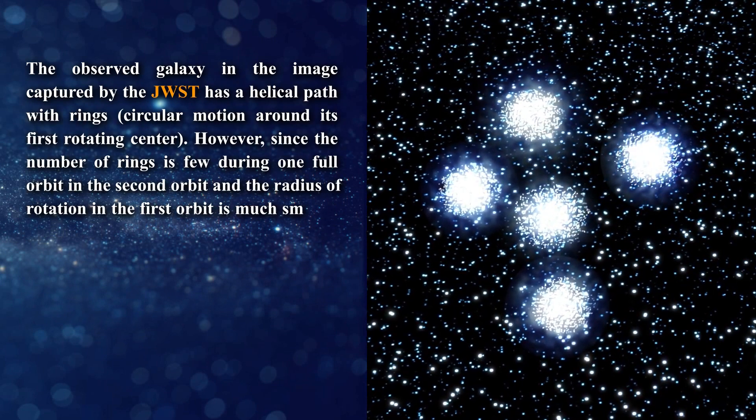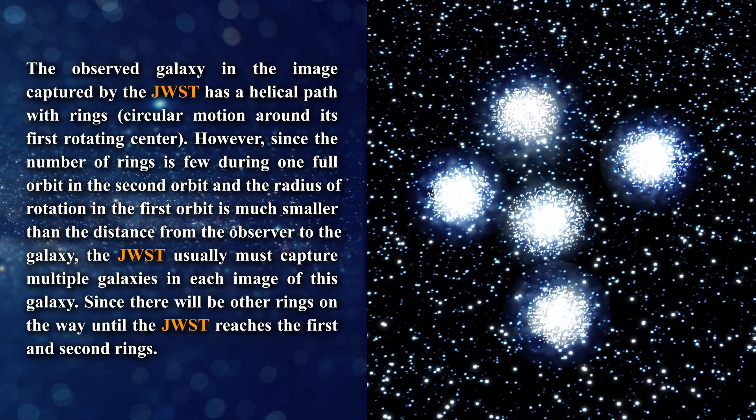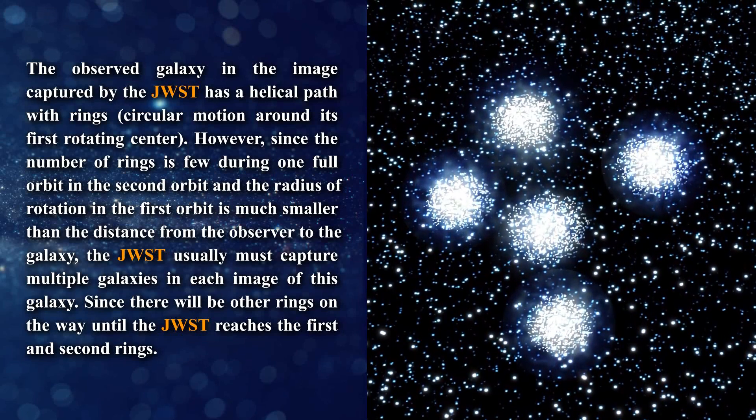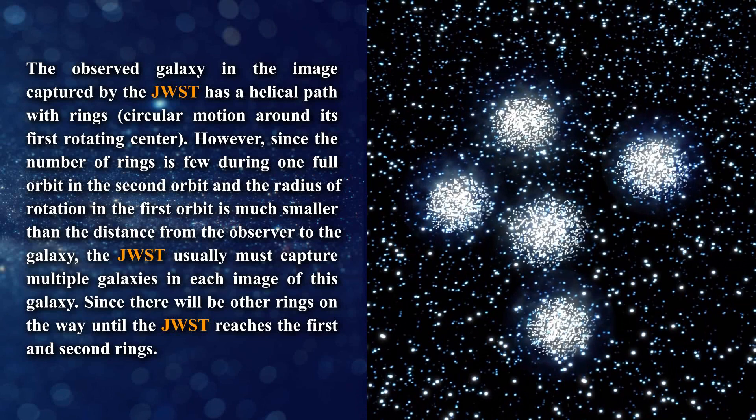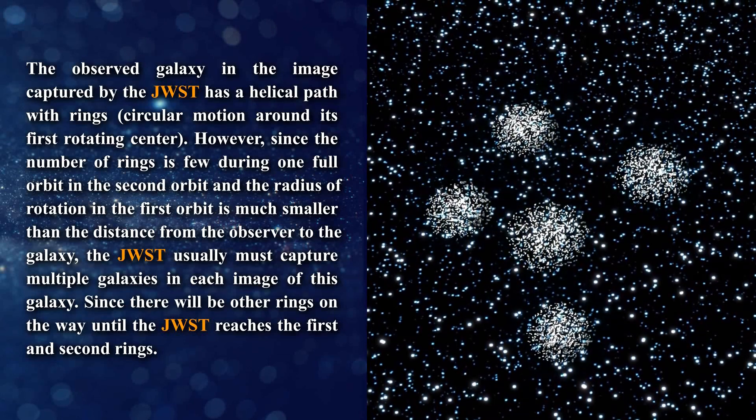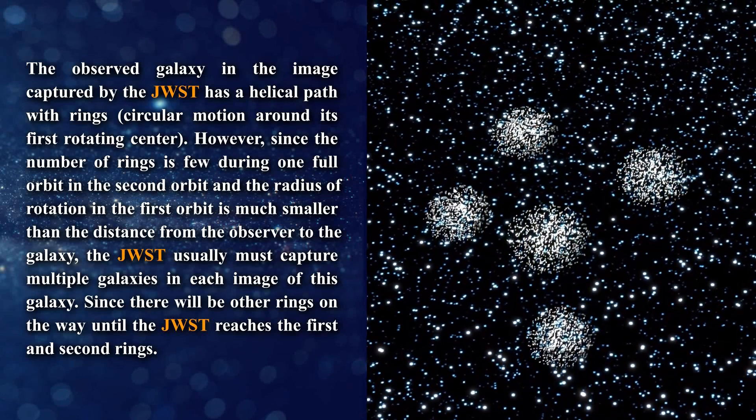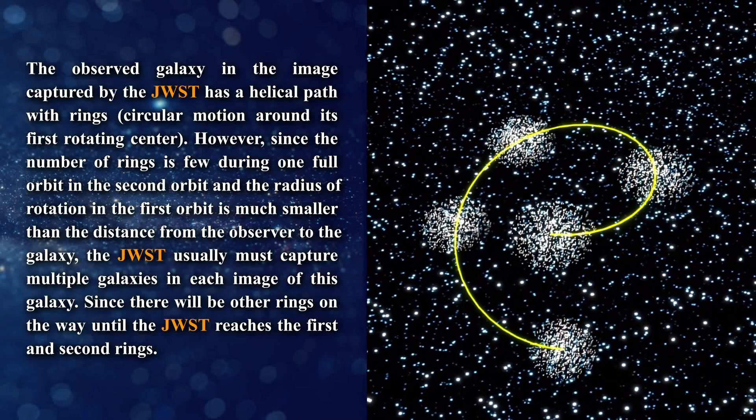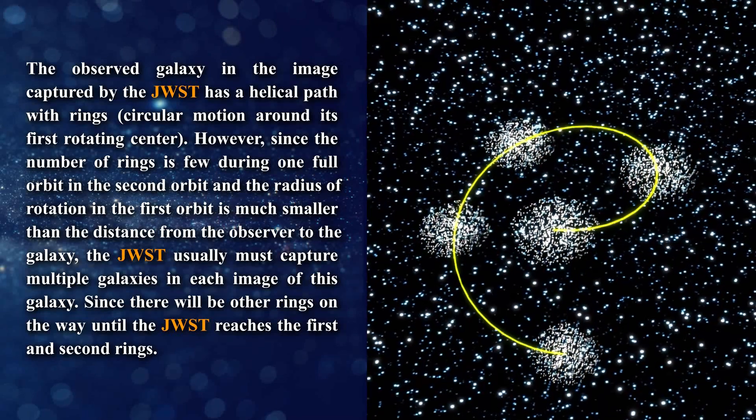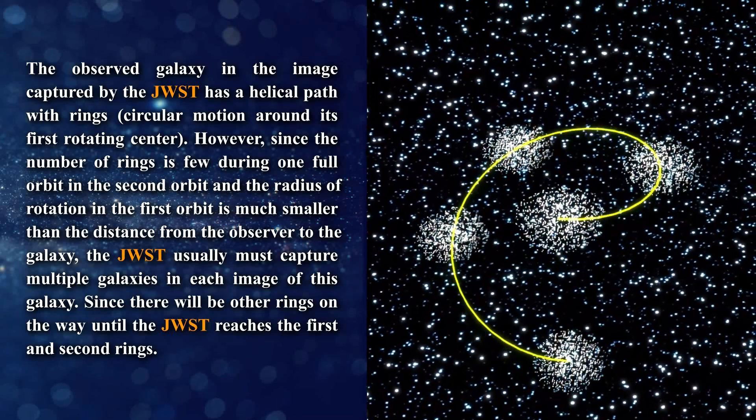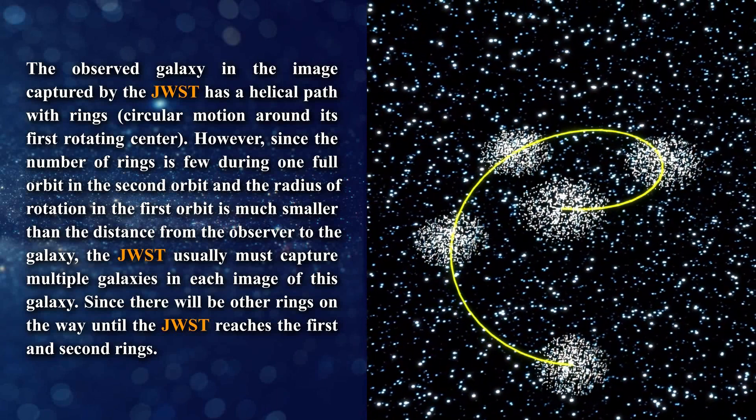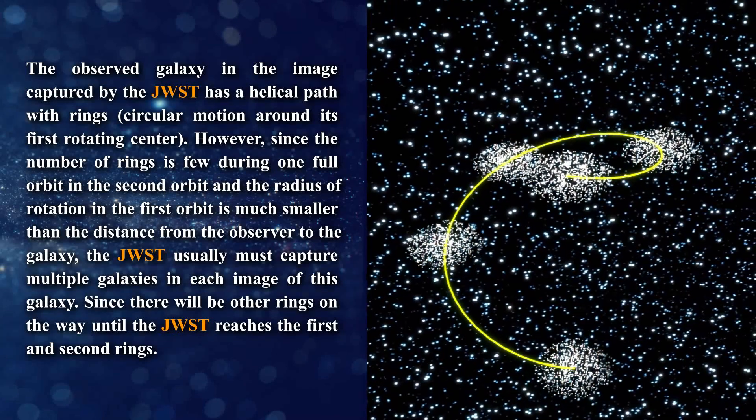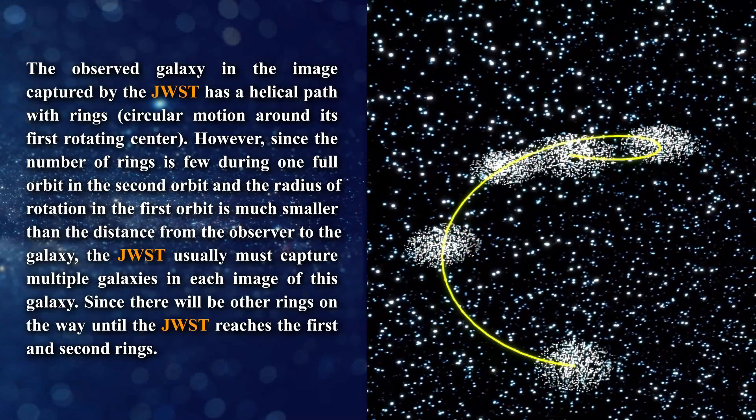The observed galaxy in the image captured by the James Webb Space Telescope has a helical path with rings, circular motion around its first rotating center. However, since the number of rings is few during one full orbit in the second orbit, and the radius of rotation in the first orbit is much smaller than the distance from the observer to the galaxy, the James Webb Space Telescope usually must capture multiple galaxies in each image of this galaxy, since there will be other rings on the way until the James Webb Space Telescope reaches the first and second rings.